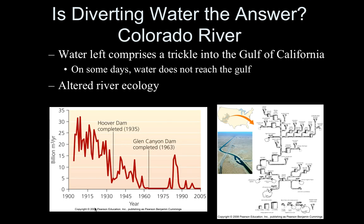What about diverting water? We can take water from one place and move it to another, but we've done that so much with the Colorado River — you can see all the different diversion areas, dams, and infrastructure. On some days water does not even trickle into the Gulf of California at all, which is an issue when you're basically stopping a stream from flowing. Dams alter river ecology significantly.